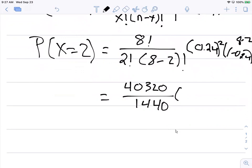Then we multiply by 0.0576, then by 0.1927. Those would be 0.24 squared, which is 0.0576, and one minus 0.24 raised to the 8 minus 2 power, which is 0.1927.